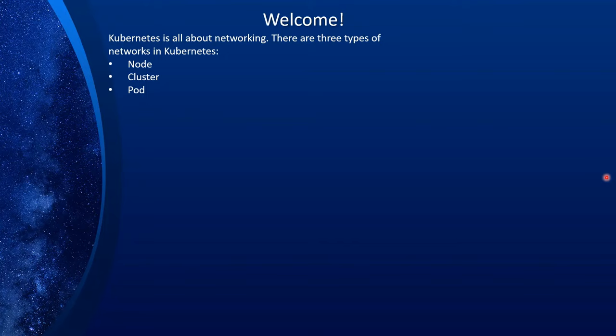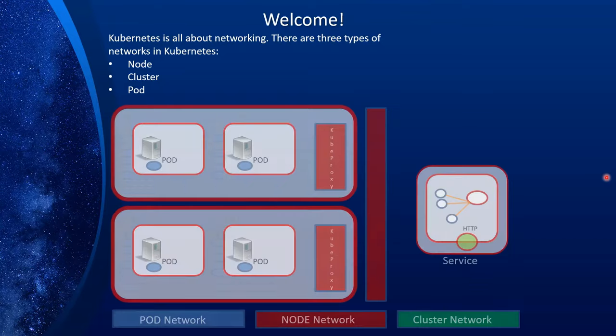Hello and welcome. Kubernetes is all about network. If you want to be successful in managing and writing applications for Kubernetes, you should really understand how networking works within Kubernetes. There are three types of networks within Kubernetes: node network, cluster network, and pod network.